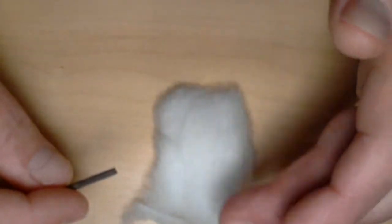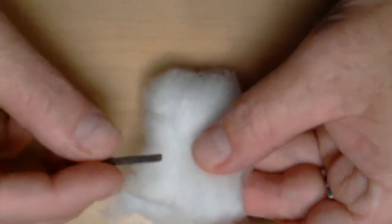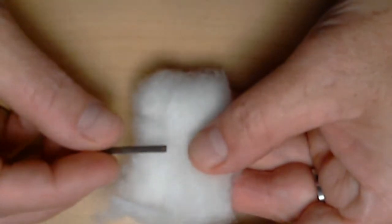And this is rolled cotton batten that you can get at a drug store. And this is the way he described it, and I've been doing it this way.